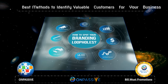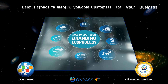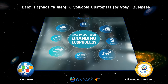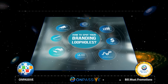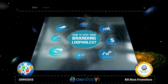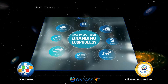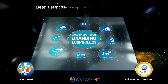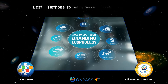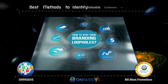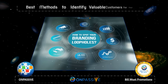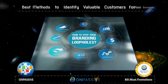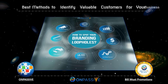CRM usually contains a great variety of different data depending on how teams are using them. Website or e-commerce platforms such as Magento, Shopify, Google Analytics, and WordPress provide a lot of information about traffic and customers.